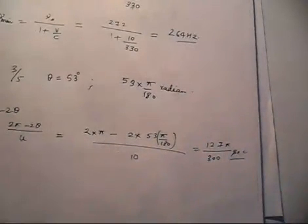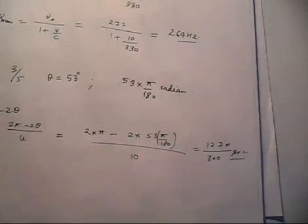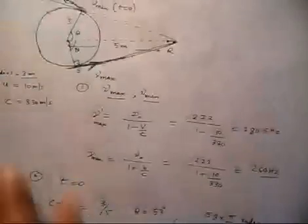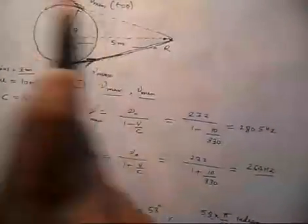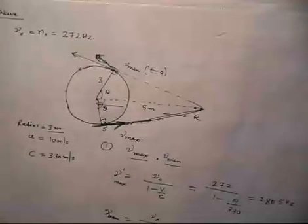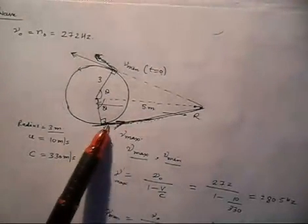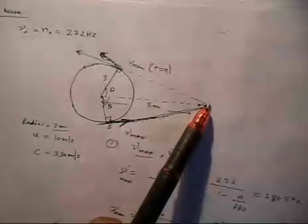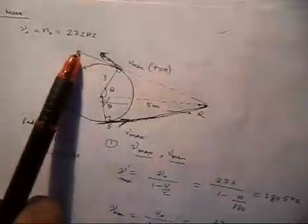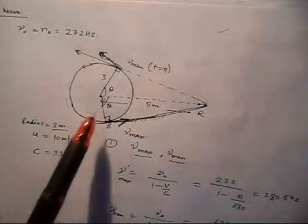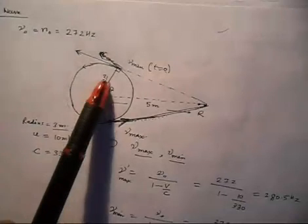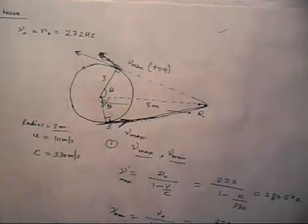This is the time between one minimum and one maximum. After this time you will have a maximum, and then a minimum again, as the source keeps moving. There will be many maxima and minima. The key points are: first, the maximum occurs when the source velocity is tangential and directed along the line toward the observer; second, the minimum occurs when the velocity is directed away; third, we find theta using the geometry of the tangent line, where cos theta equals 3 by 5.